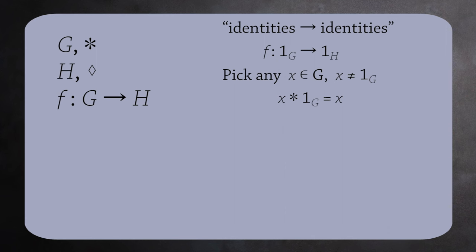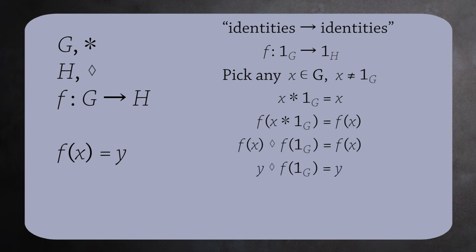Now look what happens if we apply f to both sides of this equality. We get f of x times one sub G equals f of x. Since f is a homomorphism, we can write the left side as f of x times f of one sub G. Now f of x is an element in H. Let's call it y. This gives us y times f of one sub G equals y. And since H is a group, y has an inverse. If we multiply both sides by the inverse of y, we get f of one sub G equals one sub H. This proves that homomorphisms send identity elements to identity elements.